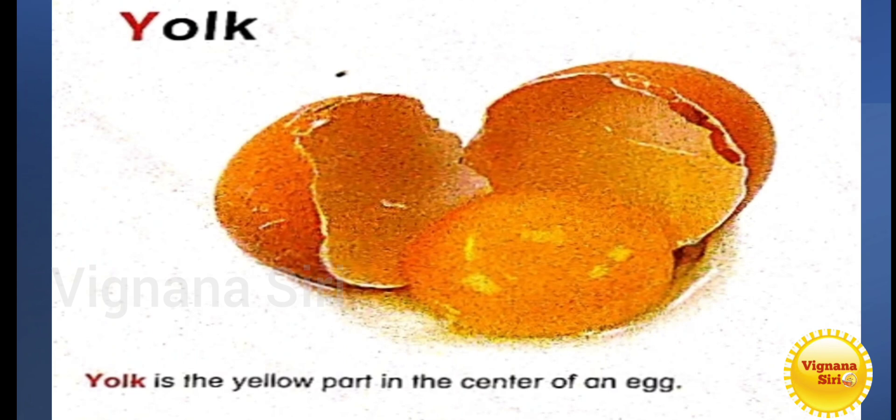Y for yolk. Yolk is the yellow part in the center of an egg. In general there are two eggs — some of them are thin and some of them differ. But if you have any egg, it has a yellow part in the center. Okay?